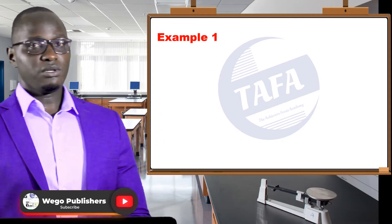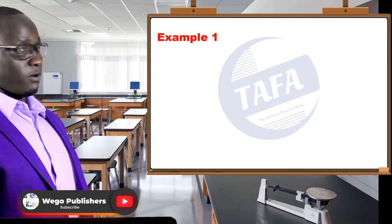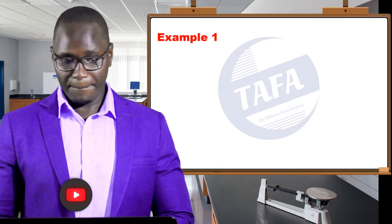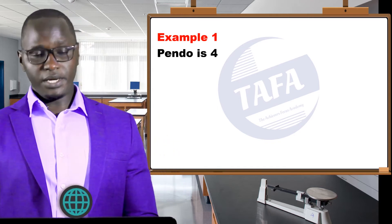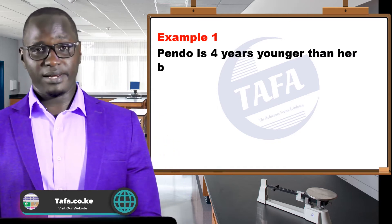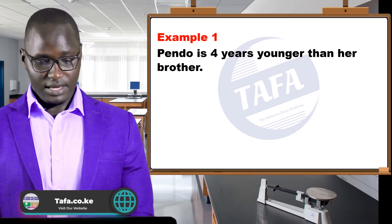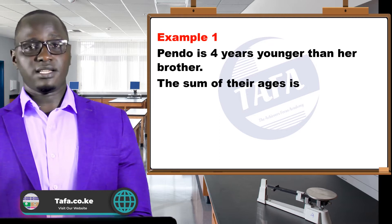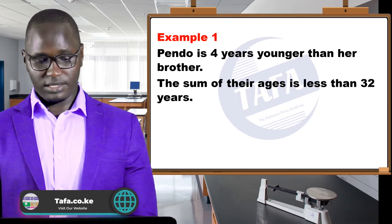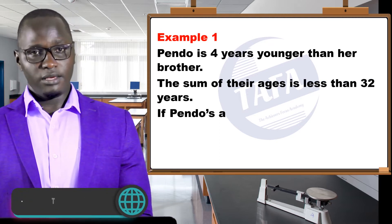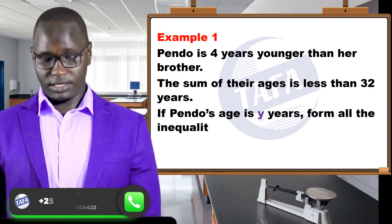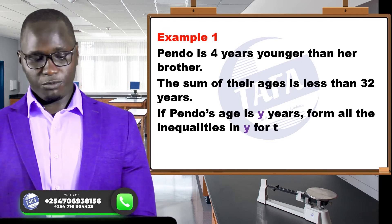The first example: Pendo is four years younger than her brother. The sum of their ages is less than 32. If Pendo's age is y years, form all the inequalities in y for the given situation.